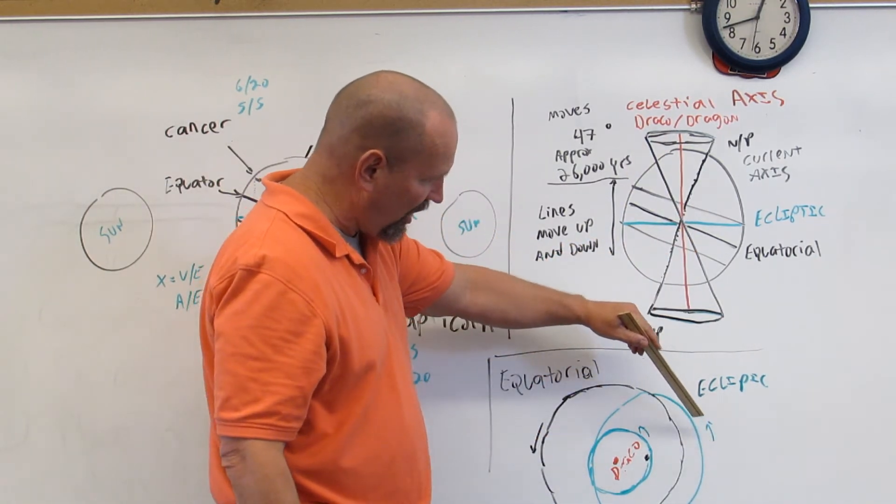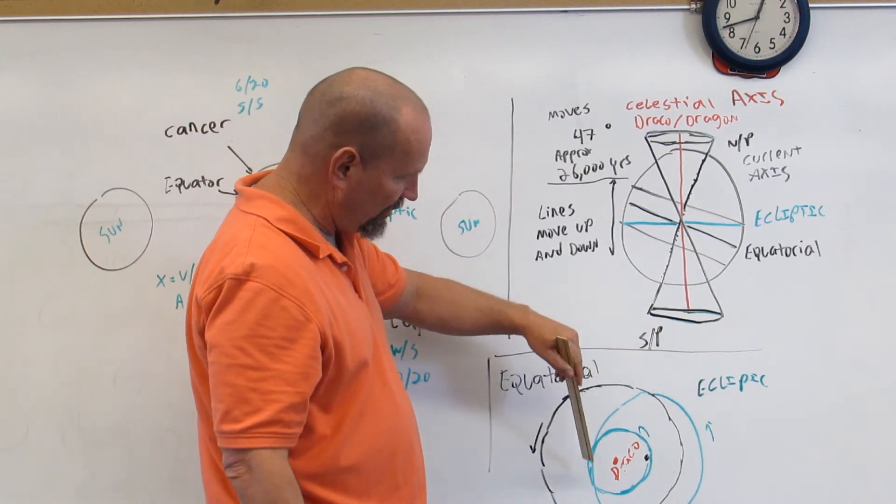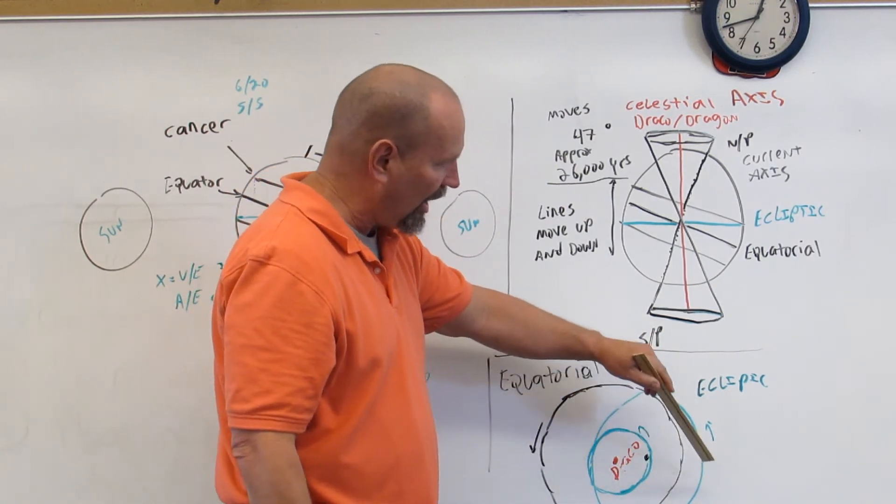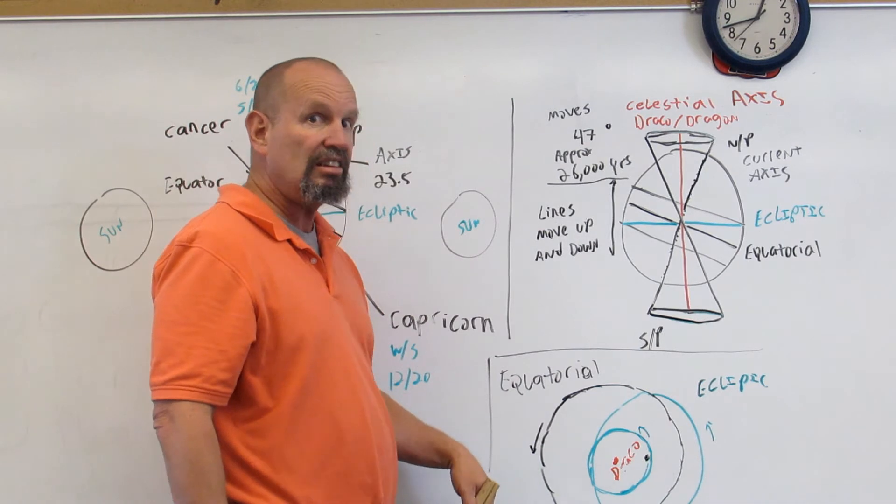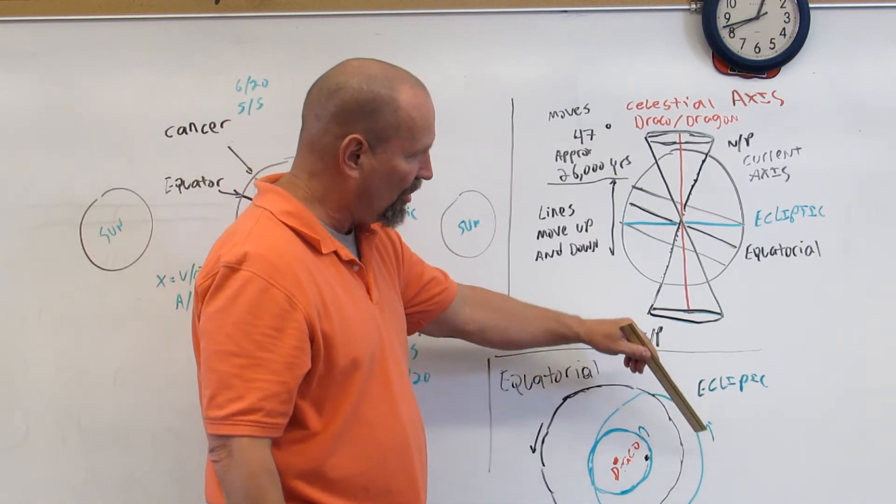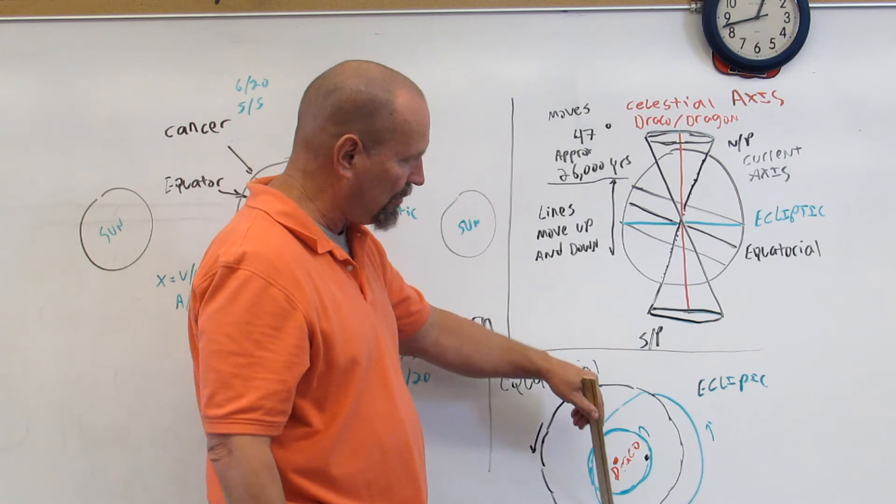This green line here represents the ecliptic line. That's the line that the sun travels through as it goes across in the course of a time of year.